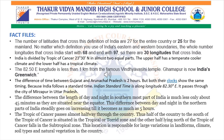Here are some facts regarding India and its coordinates. The number of latitudes that cross India are 27 for the entire country or 25 for the mainland, while the number of longitudes that cross India are 30. India is divided by the Tropic of Cancer at 23 degrees 30 minutes north into almost two equal parts. The difference of time between Gujarat and Arunachal Pradesh is two hours, but both their clocks show the same time because India follows standard time.